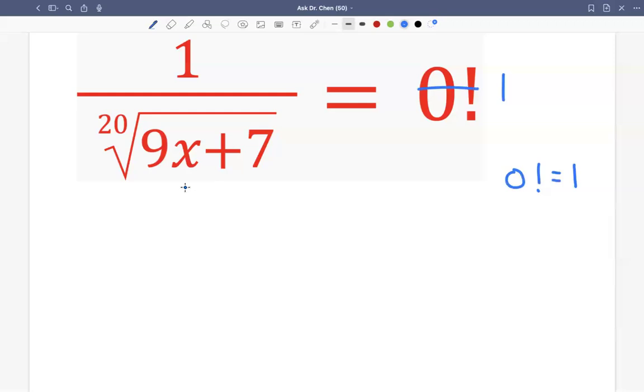So now we can multiply this term on both sides. On the left hand side we get 1. On the right hand side we have 1 multiplied by this term. So we get 20th root of 9x plus 7.